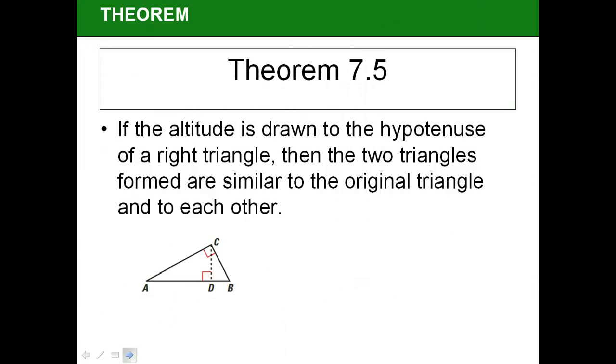It says that if an altitude is drawn to the hypotenuse for a right triangle, that is from the vertex of the right angle down to the hypotenuse, CD would be our altitude. Then the two triangles formed, a small and a medium, are similar to the original triangle and then to each other also. So let's look at our three triangles.